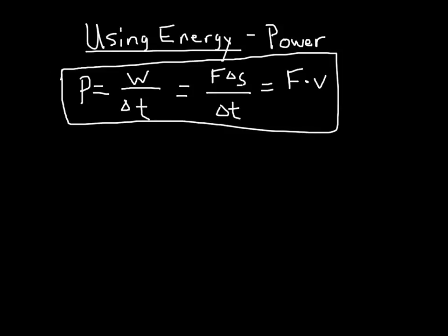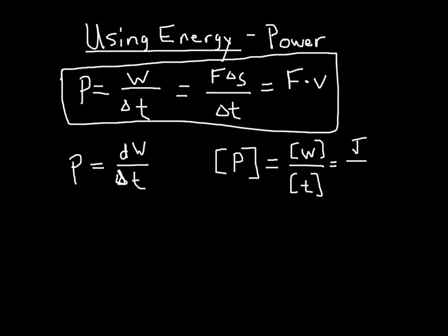If I want instantaneous power, power at any given instant moment, I need to take the derivative of work with respect to time. It doesn't really change the equation that I'm using, it just changes how I apply it. If I want to know the units of power, the units of power are equal to the units of work divided by the units of time, which would be a joule divided by a second, which we give the name watts.